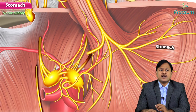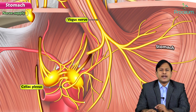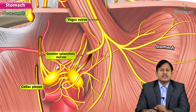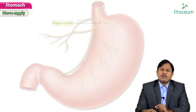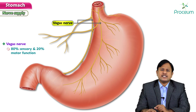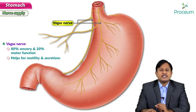Regarding nerve supply, the vagus is the most important nerve, along with the celiac plexus. The greater splanchnic nerves from T5 to T10 form the majority of the sympathetic nerve supply. The vagus is 80% sensory and 20% motor, mainly helping with motility and secretions in the stomach.